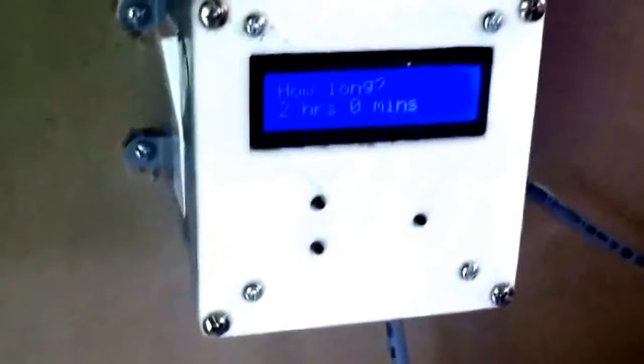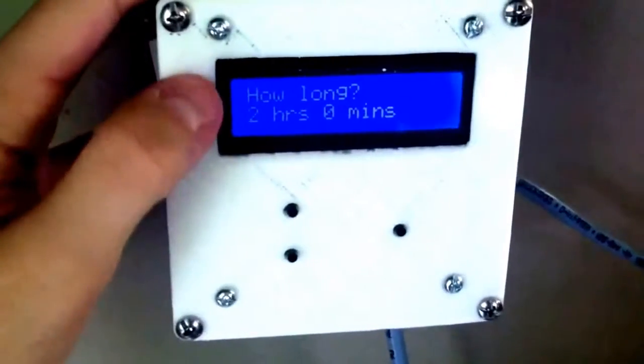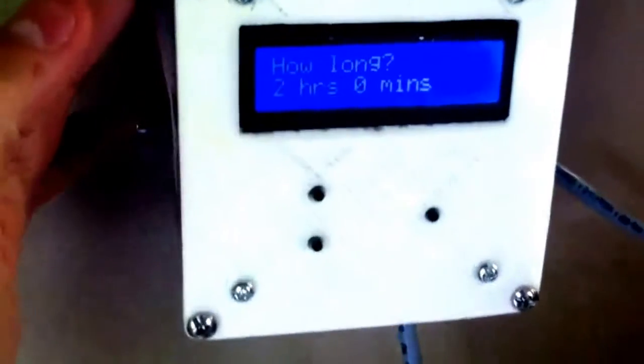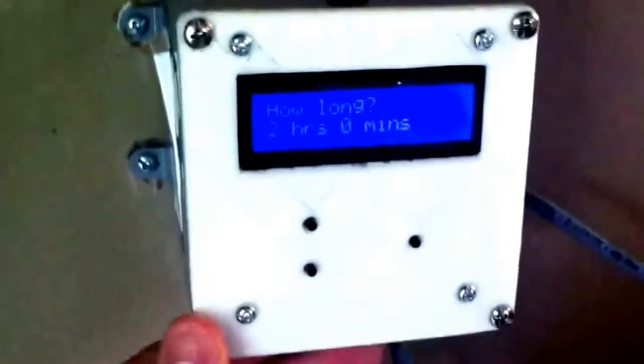Inside this box, we have the control circuitry. Which is basically an Arduino in this LCD. Along with these buttons. I have a relay here, which controls the valve. On the bottom, I have the 120 volts coming in. Converted to 5 volts DC for all the electronics.